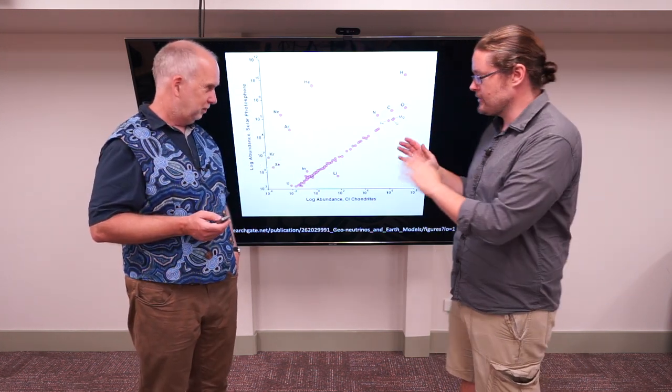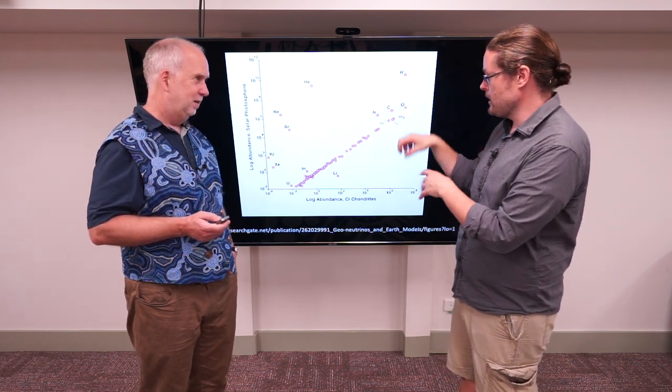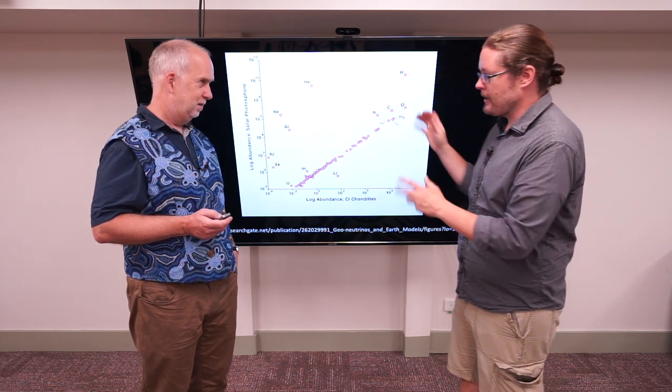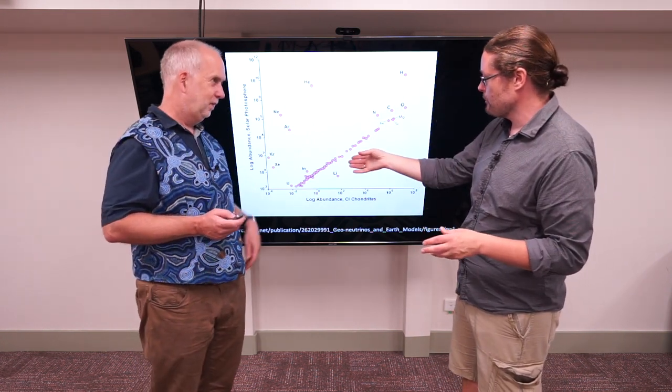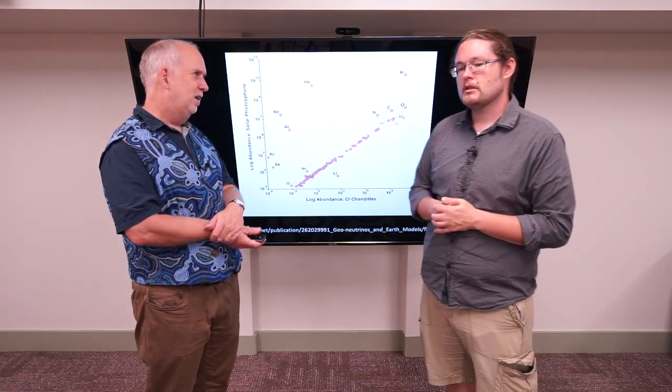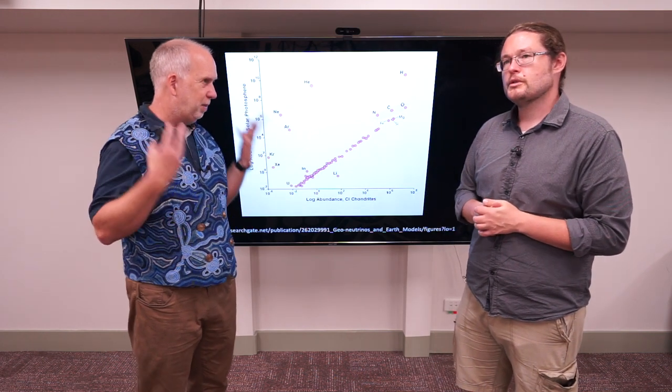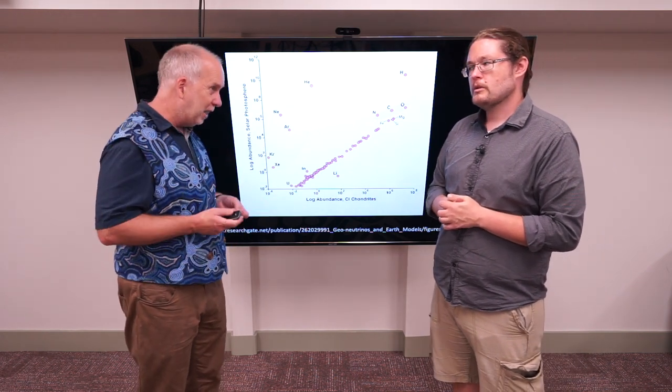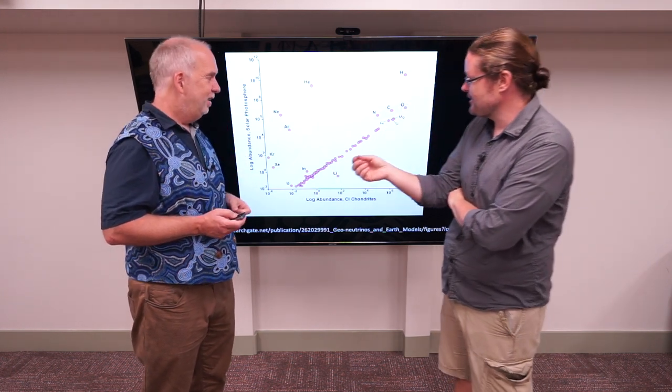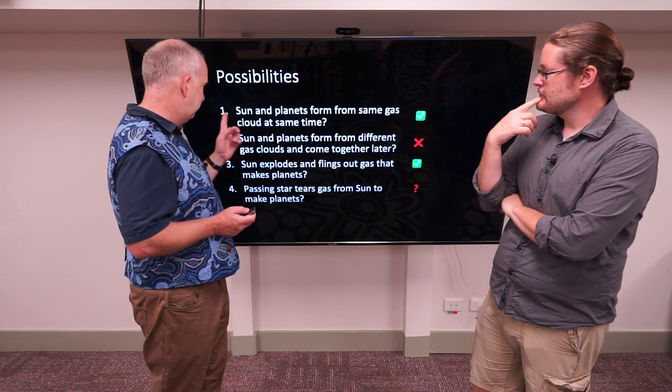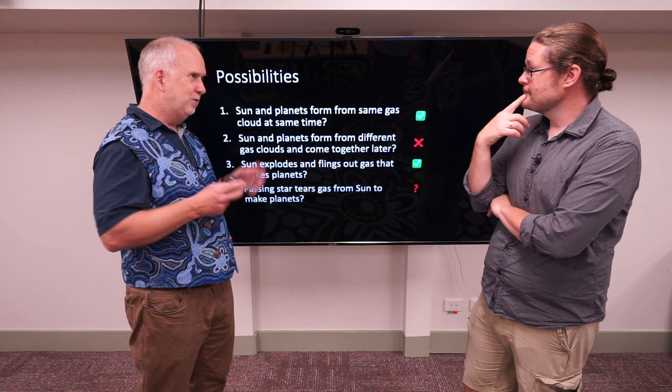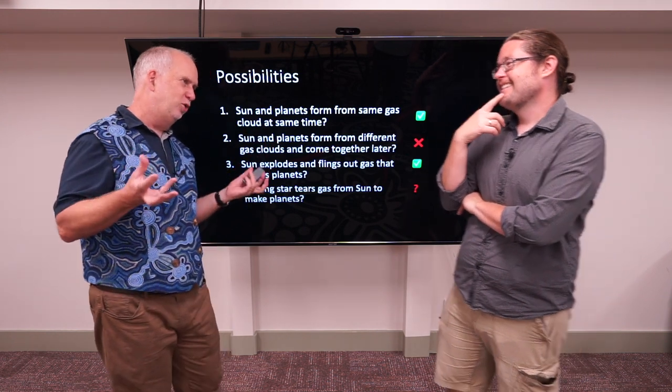So we're still seeing that from the composition in a representative sample of our solar system, for the most part minus the gases that got blown away, is spot-on with what the Sun is. So this seems to suggest that the Sun and the planets formed from the same gas cloud, because this was important because there was one idea that they formed from different clouds. So if you look back at our theories, the Sun and planets form from the same gas at the same time, then tick.